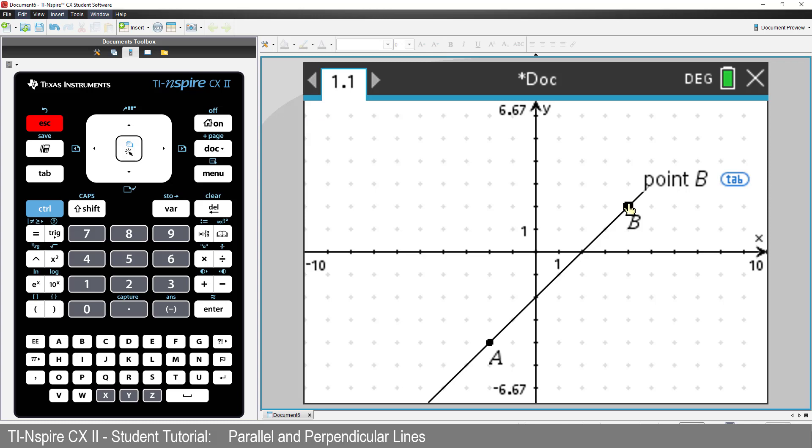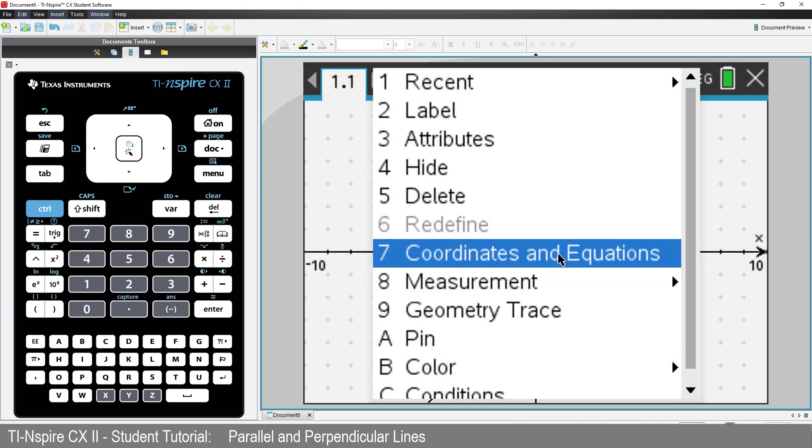What's the equation to our line? To see the equation, move the mouse over the line, press Control followed by Menu. And then select Coordinates and Equations.